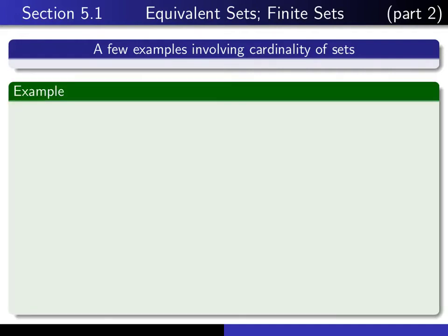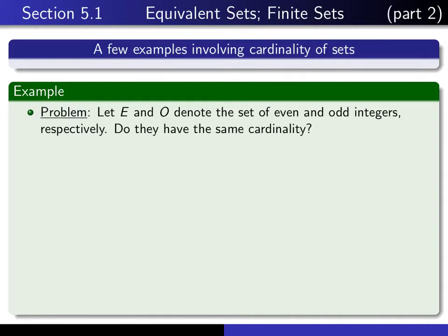So let's consider the following example. We're going to let E denote the set of even integers, and we let O denote the set of odd integers. The question is, do they have the same cardinality?